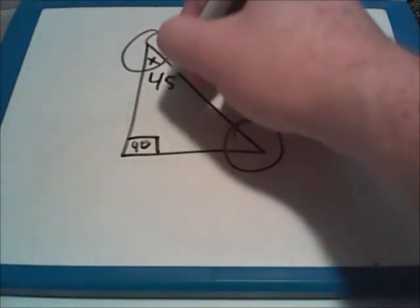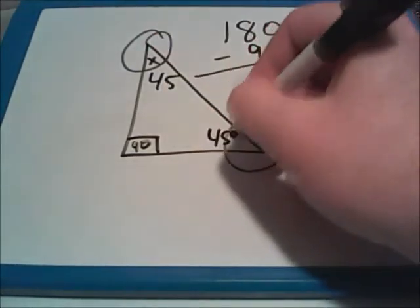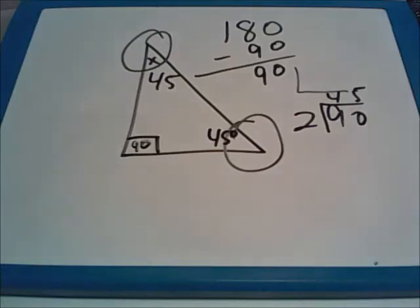So this corner is worth 45 degrees and this corner is also worth 45 degrees. So here you're actually being tested on how much is a right angle worth, and then being able to use that information to figure out the amounts of the missing angles.